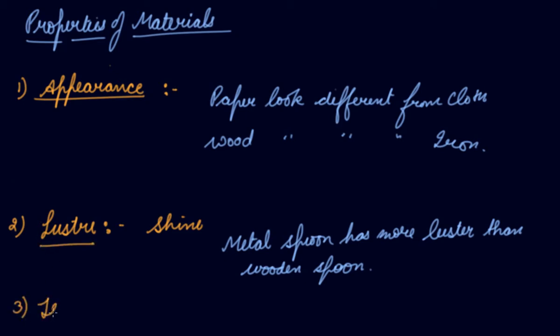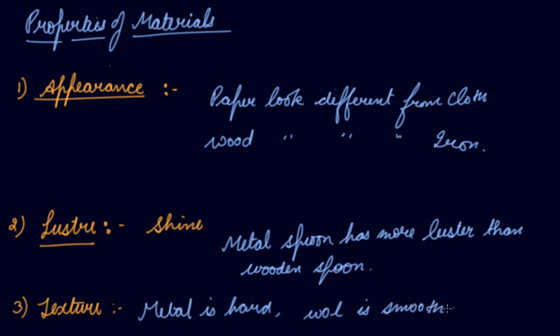Third comes texture. Different materials feel different when you touch them, which is why they have different textures. For example, metal is hard, while wool is smooth. Soft materials can be compressed or stretched easily, whereas hard materials are difficult to compress. So materials can be classified on the basis of their texture as well.